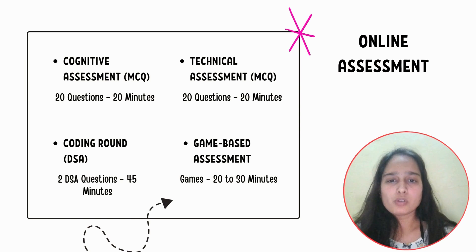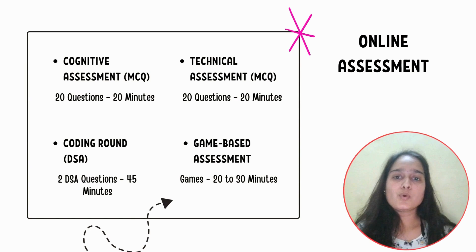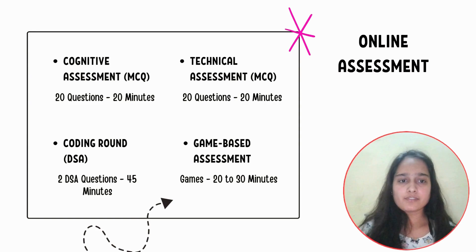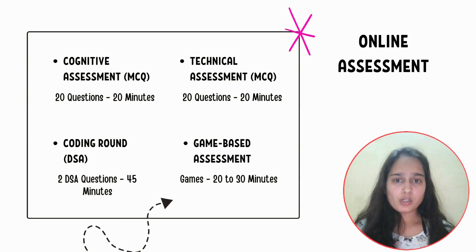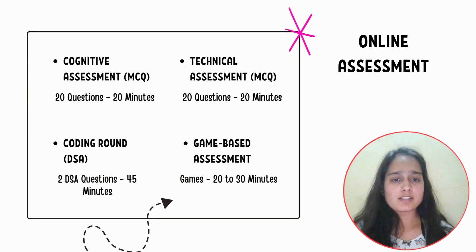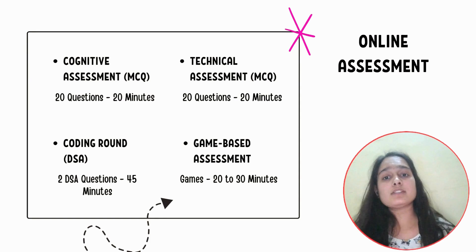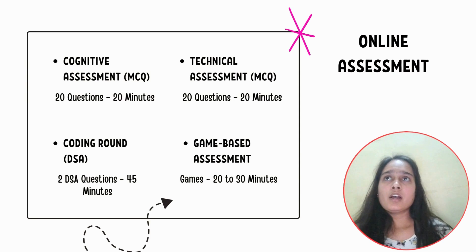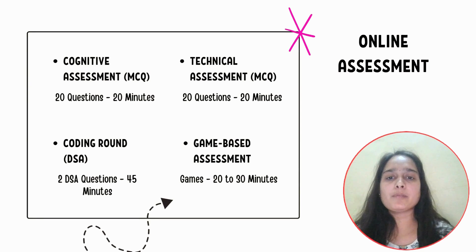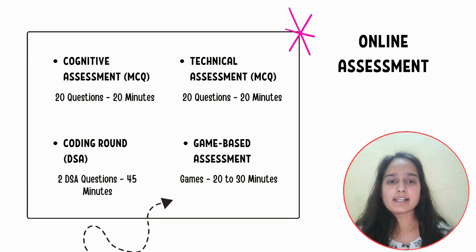Interviews typically begin with your introduction, so prepare a crisp intro. From students selected in the previous year, interviews started with resume projects and skills — it depends on the interviewer. Mention at least two or three good projects in your resume and don't write anything fake. Questions can be asked on polymorphism, the four pillars of OOP, difference between compile-time and runtime polymorphism, DBMS normalization, joins, ACID properties, and operating systems. You will also be asked to write code in the code editor provided by them. After the interview, depending on your performance, you will be selected for the internship at Adobe.